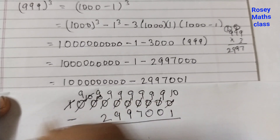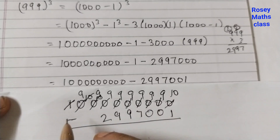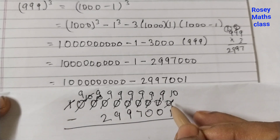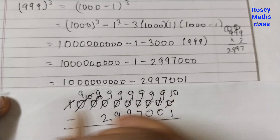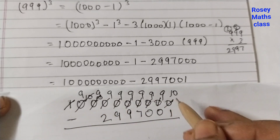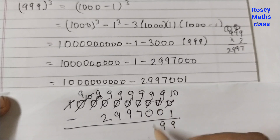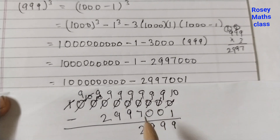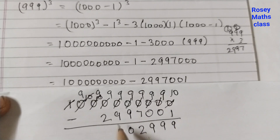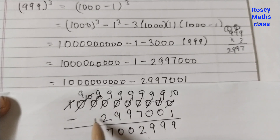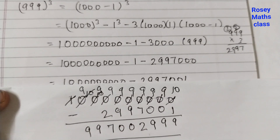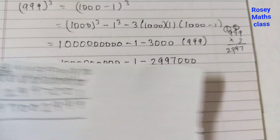This is the same method whenever you have a big number with zeros — the last zero becomes 10 and the rest become 9. So: 10 minus 1 = 9, 9 minus 0 = 9, 9 minus 0 = 9, 9 minus 7 = 2, 9 minus 9 = 0, 9 minus 9 = 0, 9 minus 9 = 0, 9 minus 2 = 7, and the leading 9 comes down. This gives us our answer.